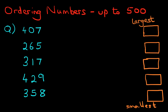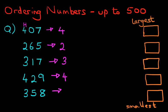Now let's have a look at our numbers. We've got five sets of numbers, and you know the routine by now. We look at the digit on the left to begin with — that in this case is the hundreds. So let's have a look at how many hundreds each number has. Four hundred and seven has four hundreds. Two hundred and sixty-five has two hundreds. Three hundred and seventeen has three hundreds. Four hundred and twenty-nine has four hundreds. And lastly, three hundred and fifty-eight has three hundreds.